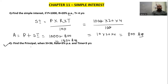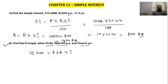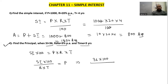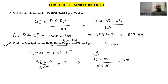Find the Principal, where Simple Interest is 36, Rate is 30% per annum, and Time is 3 years. To find Principal, we rearrange the formula: P = SI × 100 ÷ (R × T). Putting in the values: 36 × 100 ÷ (30 × 3). Cancelling gives us 400. So the Principal is 400.